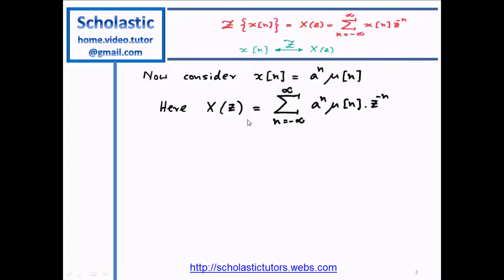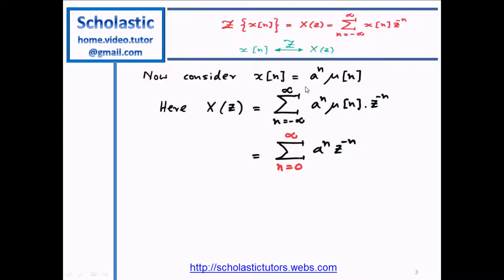Therefore, capital X(Z) equals the summation of A to the n times mu[n] times Z to the minus n. Since mu[n] is a step function with values only from n equals 0 onward, the values from minus infinity to minus 1 will be zero. Therefore, we can rewrite this summation as n equals 0 to infinity of A to the n times Z to the minus n, removing mu[n]. Essentially, we used the characteristics of mu[n] to change the limits to 0 to infinity.